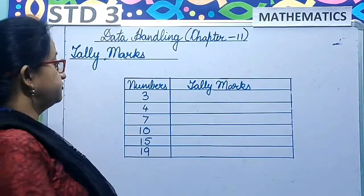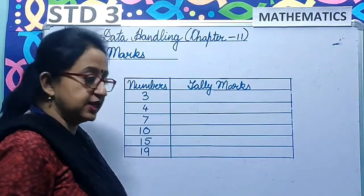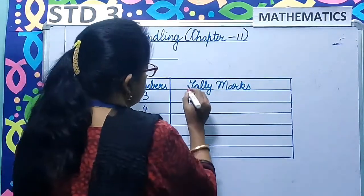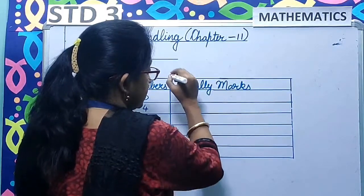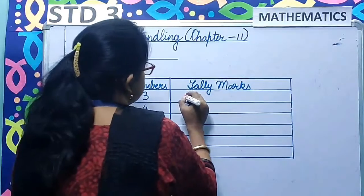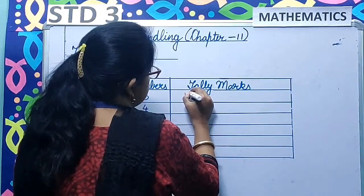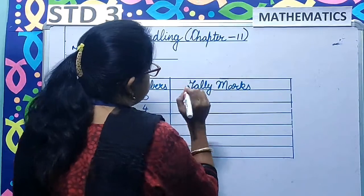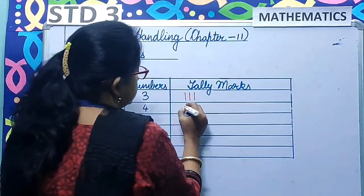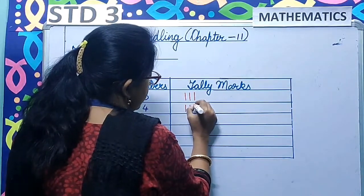Now here are a few numbers for which we will draw the tally marks. For 3: as we know, 4 vertical lines and 1 slanting line makes a group of 5 for tally. So 1, 2, 3 — three lines for 3. No vertical line is added until it reaches 5.